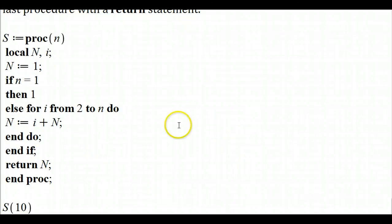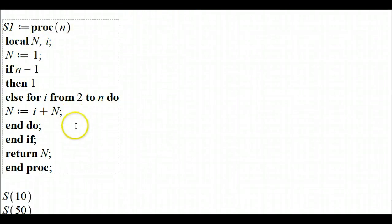So for instance, the same procedure, the same result will happen if we define a different procedure—I shouldn't call this s, I should call this s1 because I called something s before in this sheet. And then everything else is the same except you're going to say return n, and that's going to return the last value.